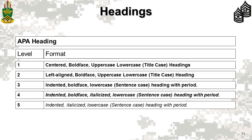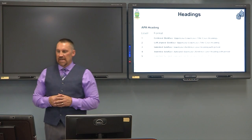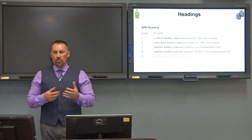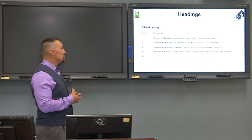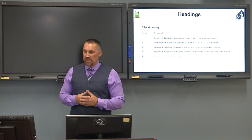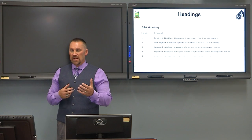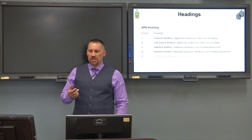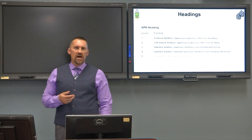Level one through level four headings are all bold-faced fonts. Level ones and twos are in title case, meaning all keywords are capitalized. Levels three and four are in sentence case — only the first word and proper nouns are capitalized — and they end with a period. The more levels you attempt to use, the more room you have for formatting mistakes. My advice is to stick with level ones, and level twos if necessary. The length of our writing assignments really doesn't justify going much further than that.